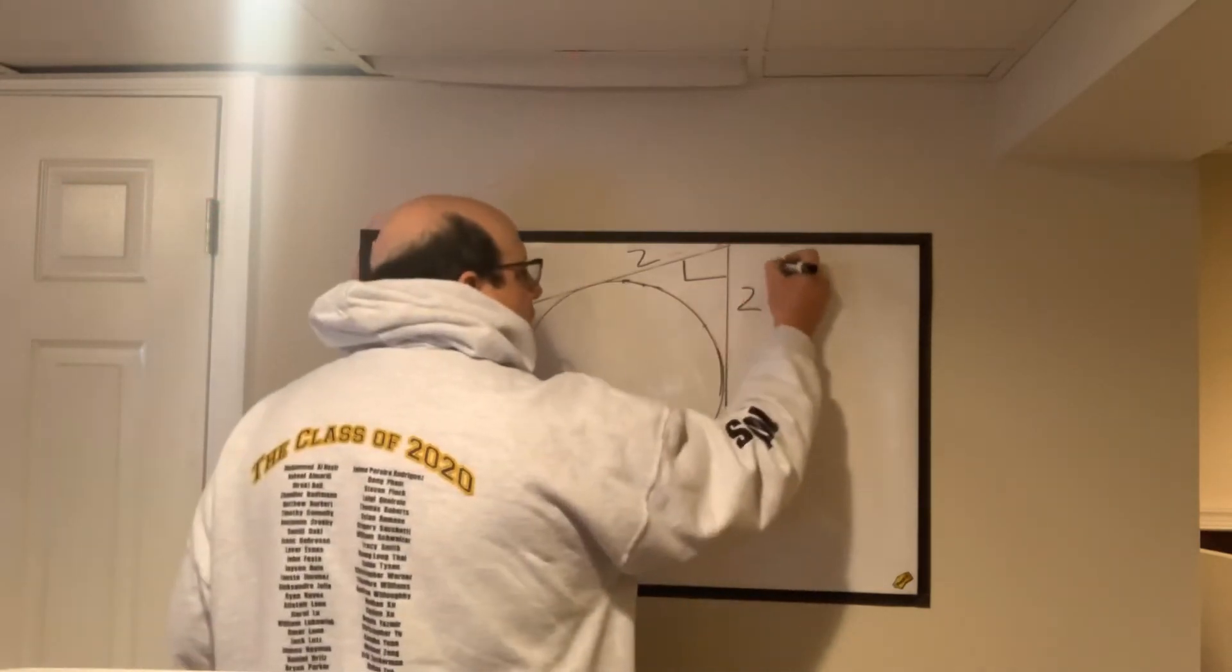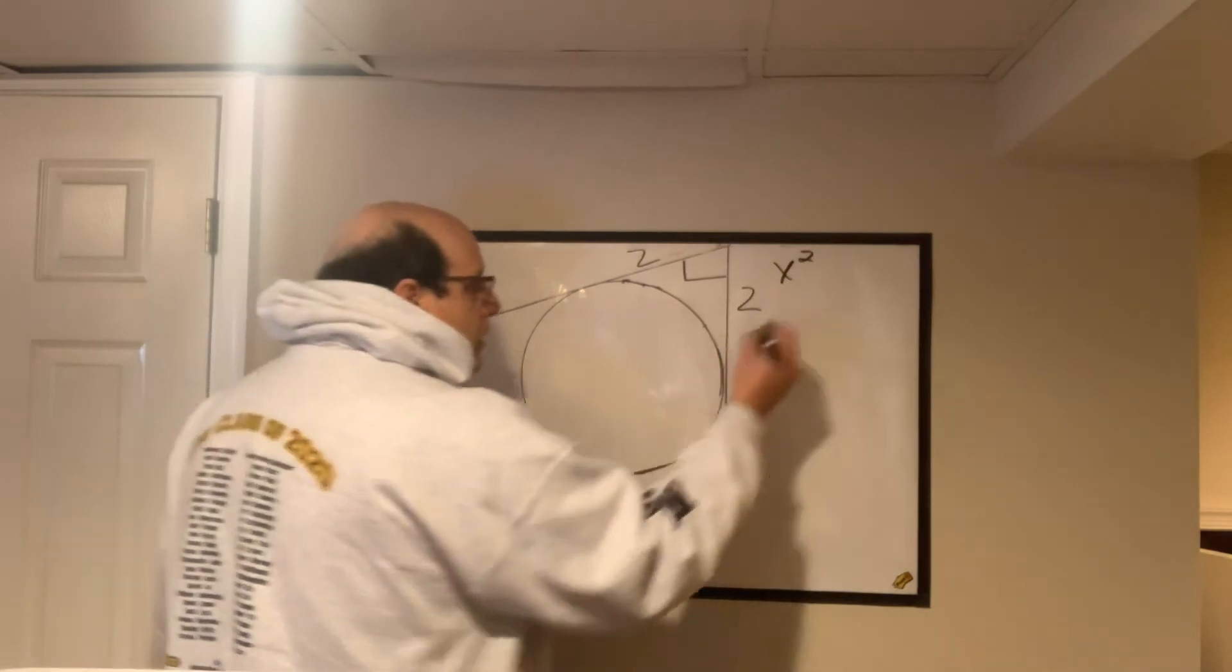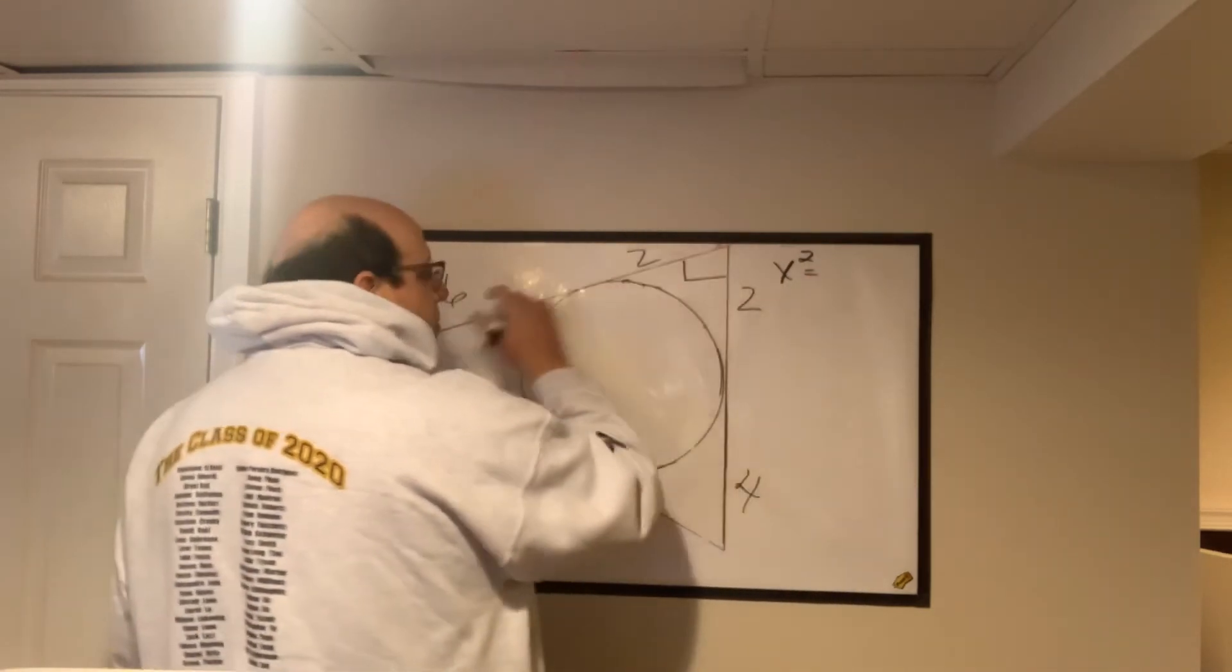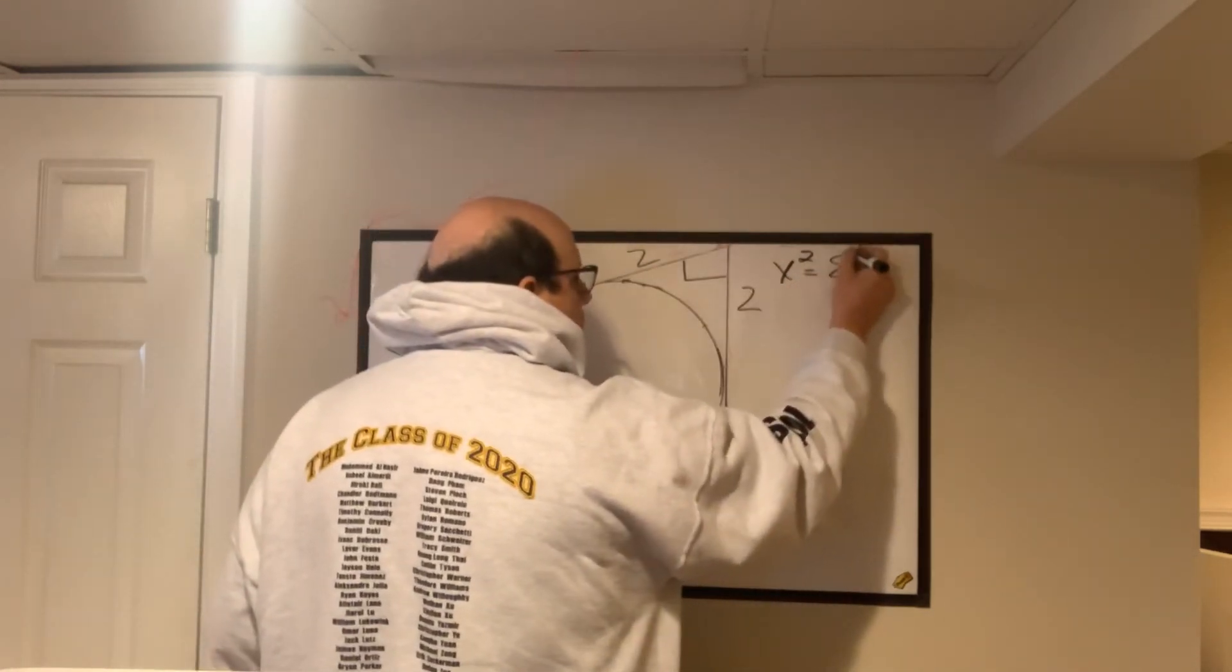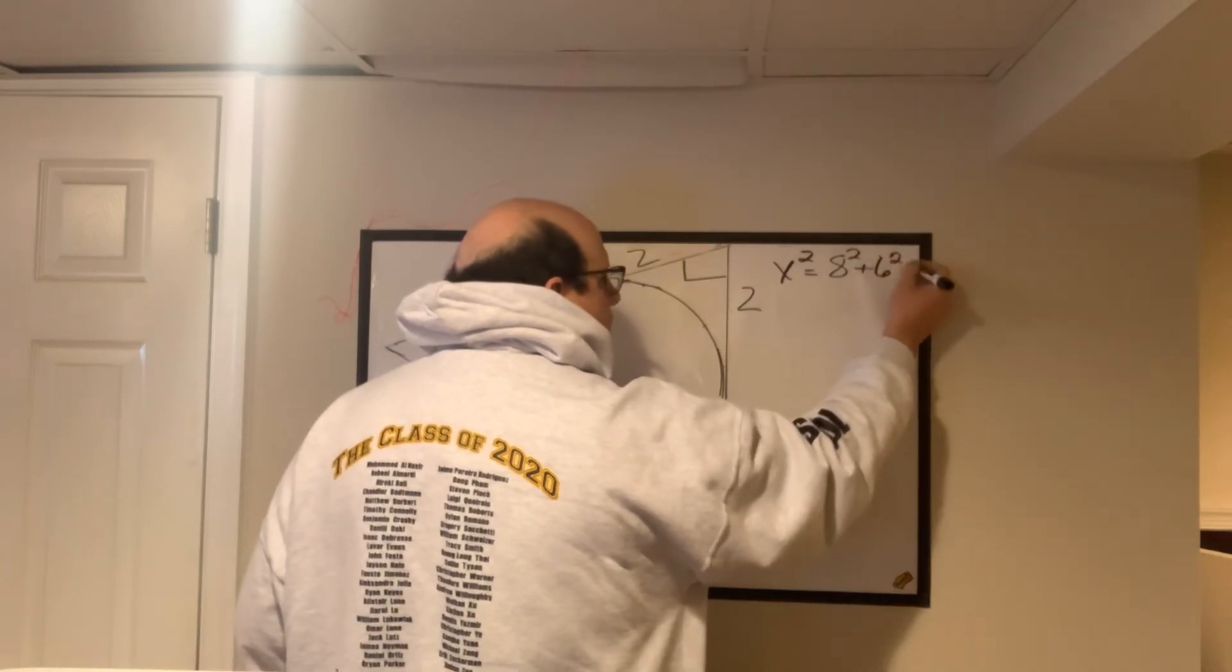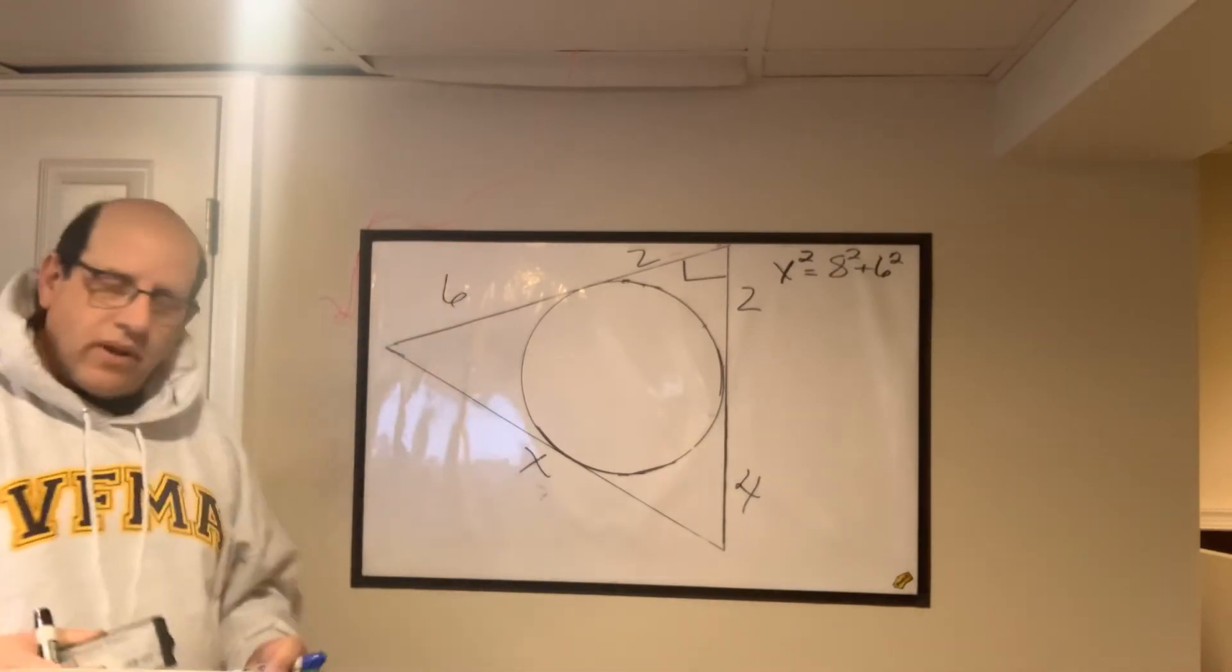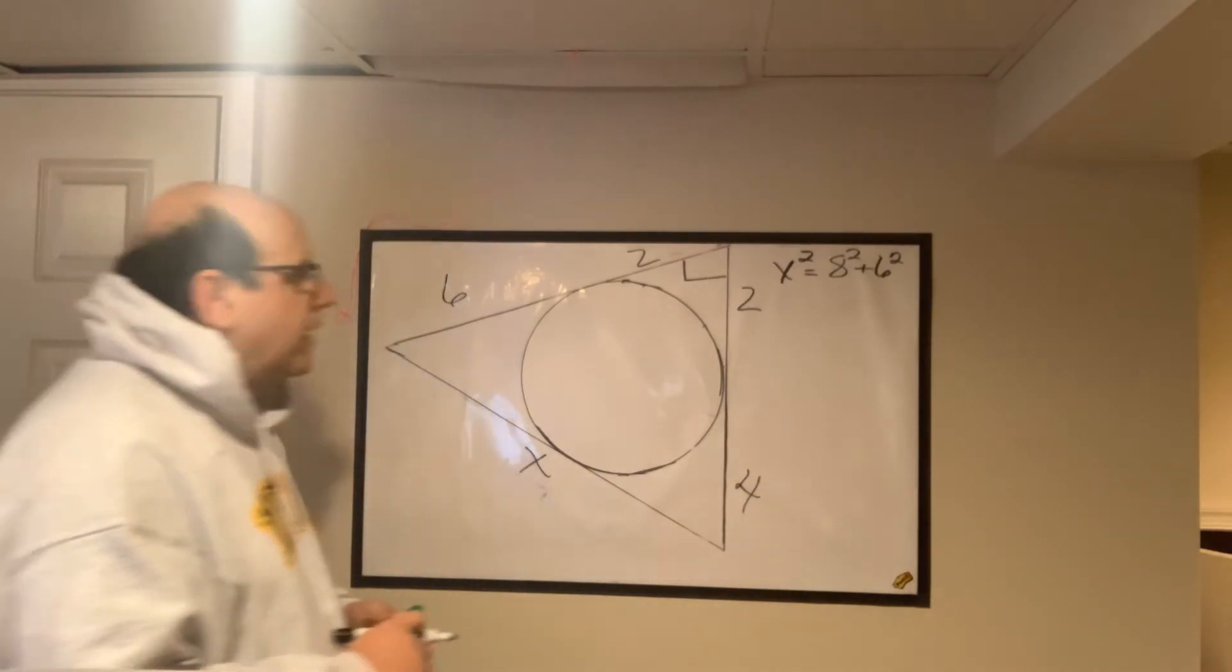So we can say x squared, the hypotenuse squared, equals 8 squared plus 6 squared. Oh my gosh, this is so easy. Right? Again, it's a 3, 4, 5 right triangle, but you don't need to know that off the top of your head.